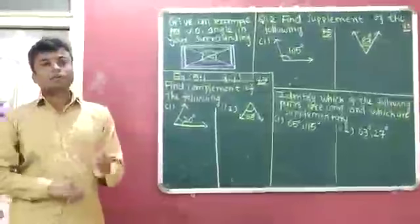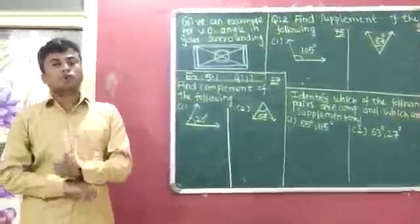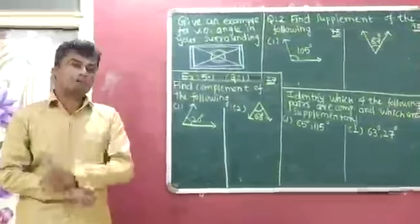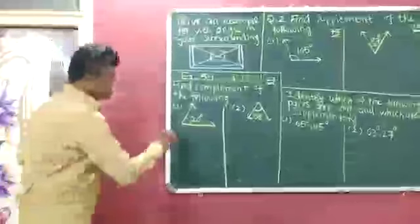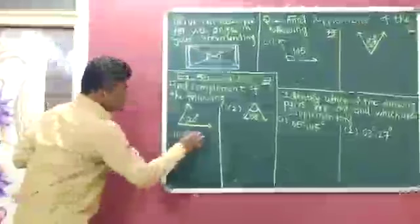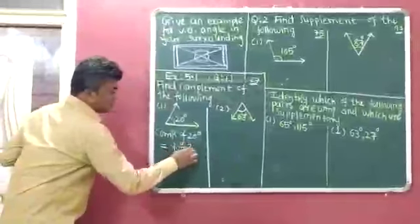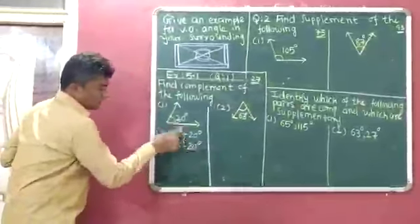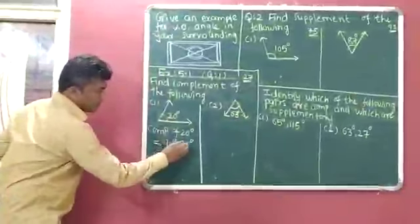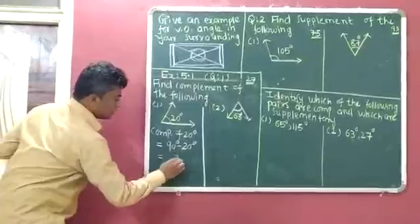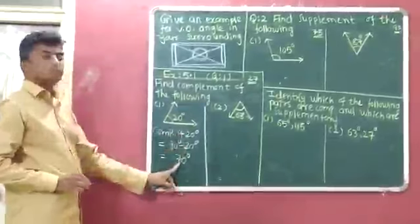Why 90 degrees? Because the sum of measures of two complementary angles is 90 degrees. So if you want to identify the complement of any angle, you have to subtract the given angle from 90 degrees. Complement of 20 degrees is equal to 90 degrees minus 20 degrees, which equals 70 degrees.